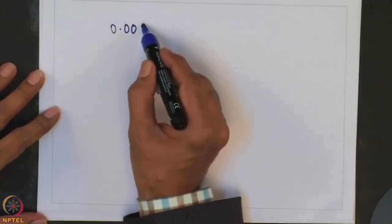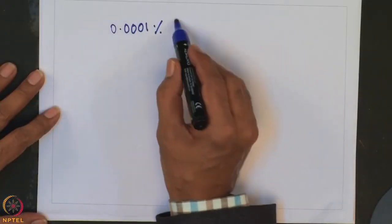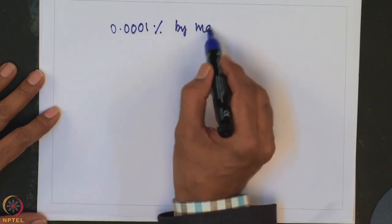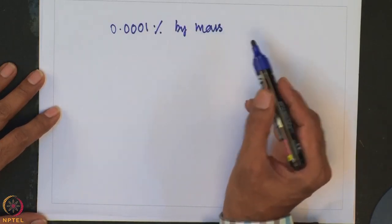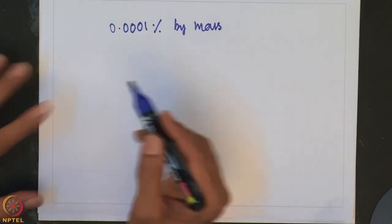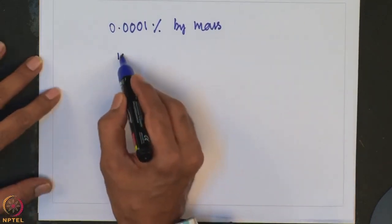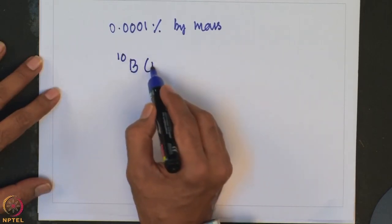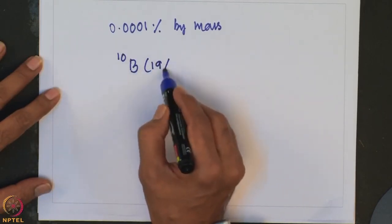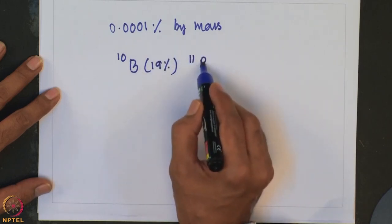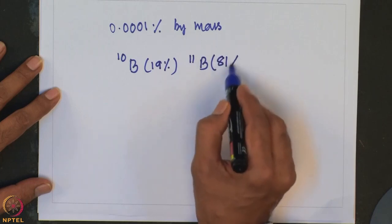Let us start with boron. Boron is a fairly rare element with abundance of about 0.0001 percent by mass in the earth's crust. It exists in two isotopic forms: 10-boron, its abundance is about 19 percent, and 11-boron it is about 81 percent.